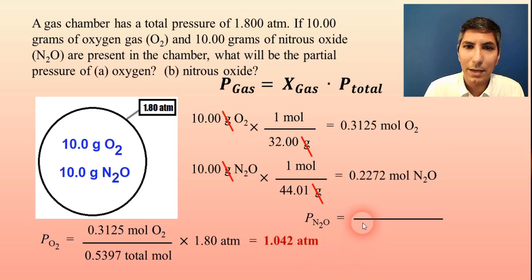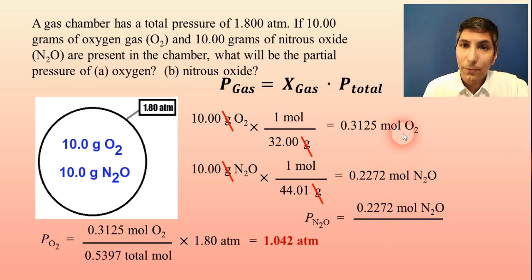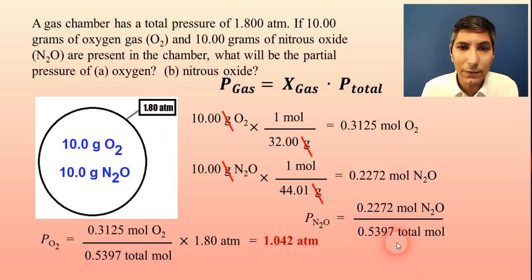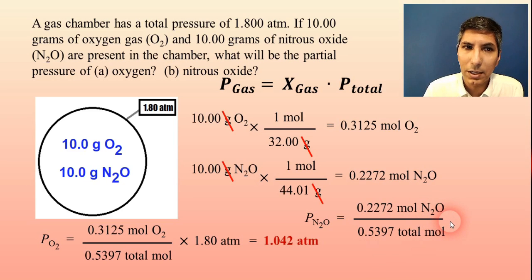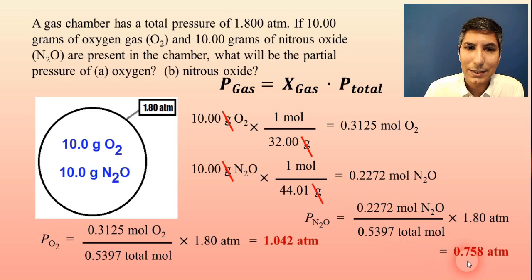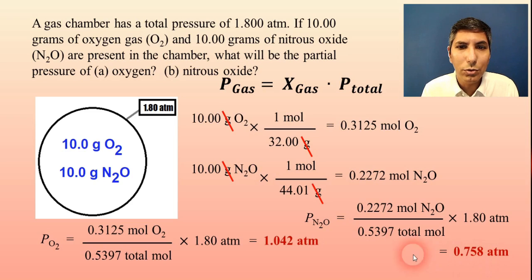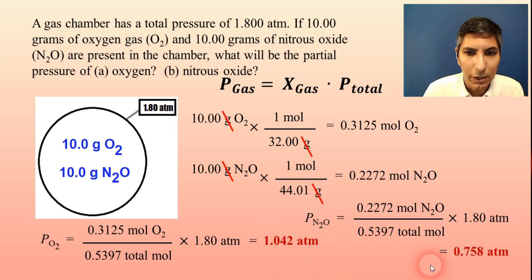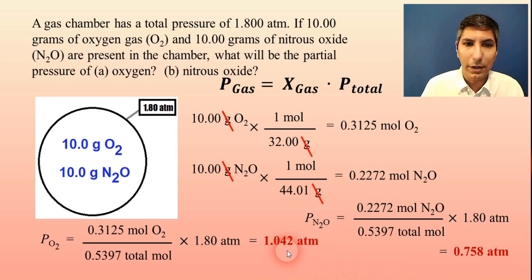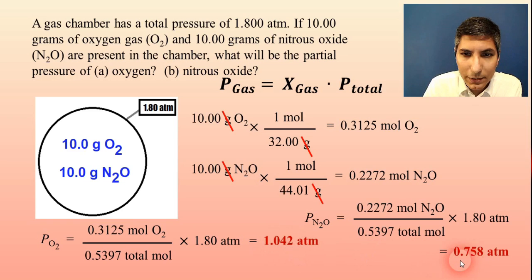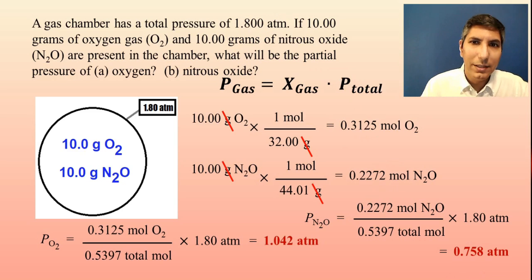Now let's do the nitrous oxide — it's done the same way. The mole fraction of N₂O is 0.2272 divided by the total of 0.5397 moles, multiplied by the total pressure of 1.800 atmospheres. When you do that math, you get about 0.758 atmospheres. Let's check our work: is 1.042 plus 0.758 equal to 1.800 atmospheres? It certainly is, which tells us we probably did this problem right.